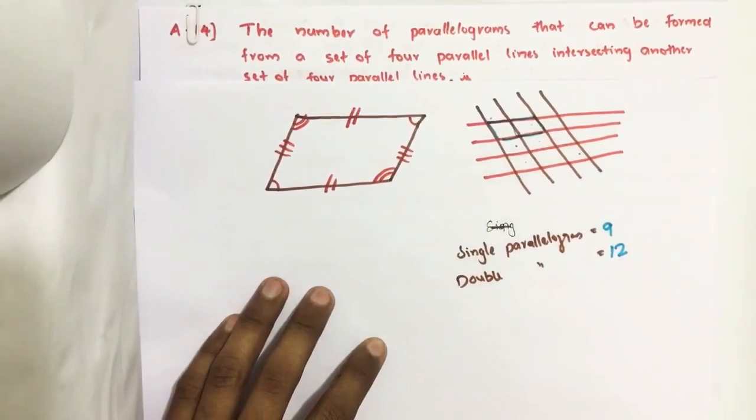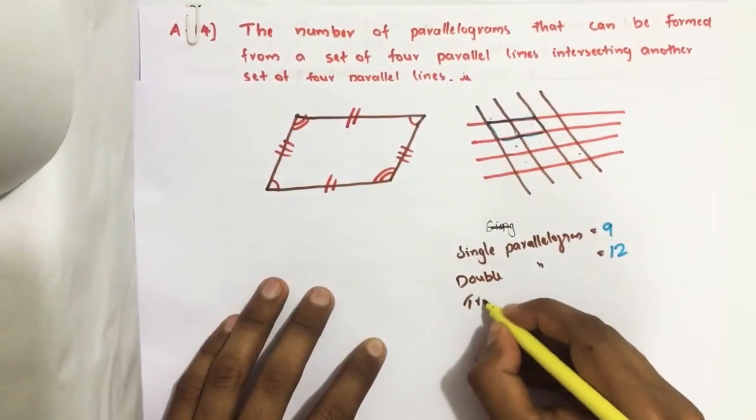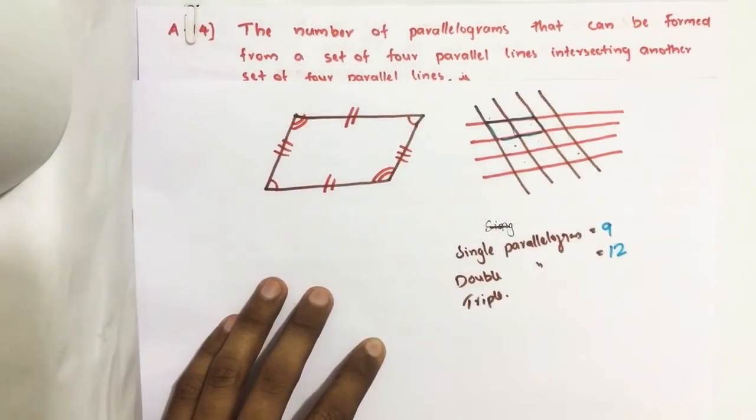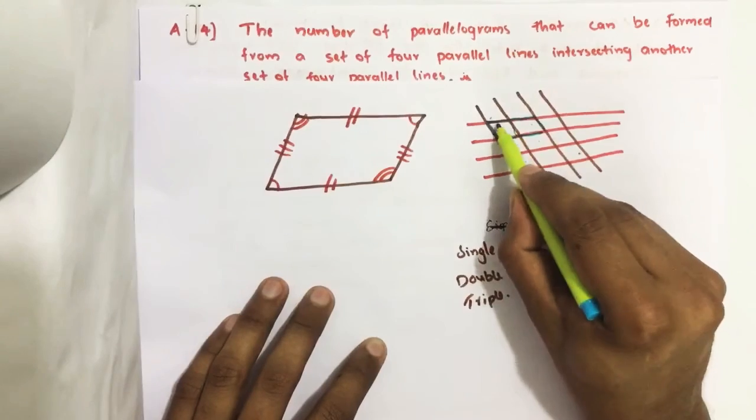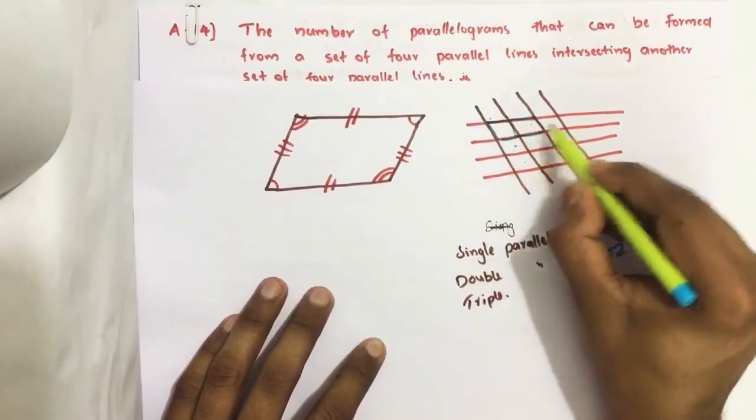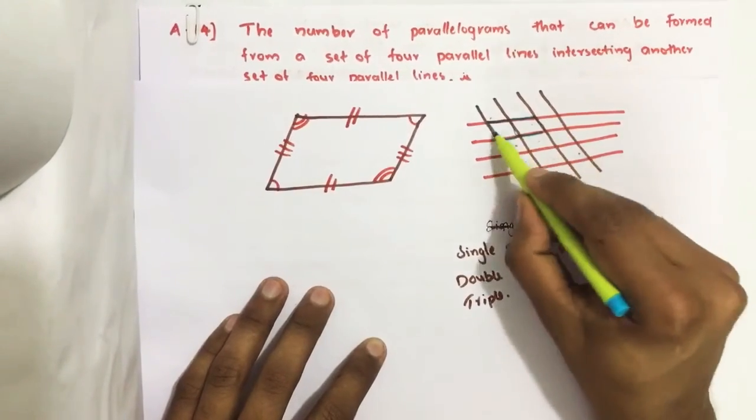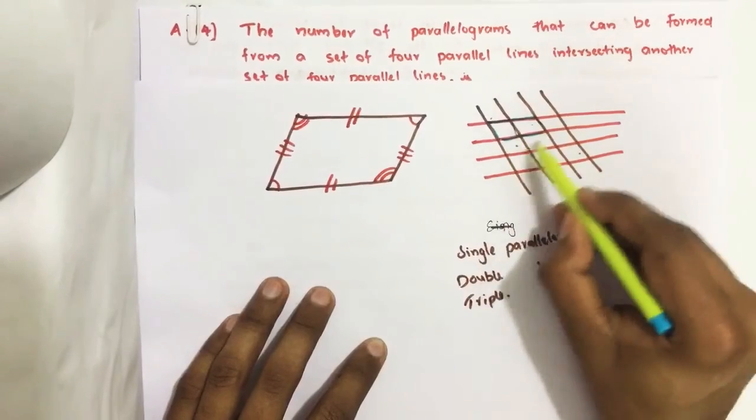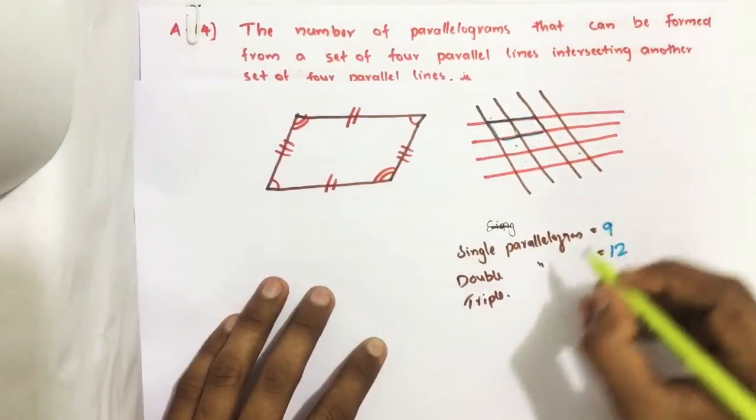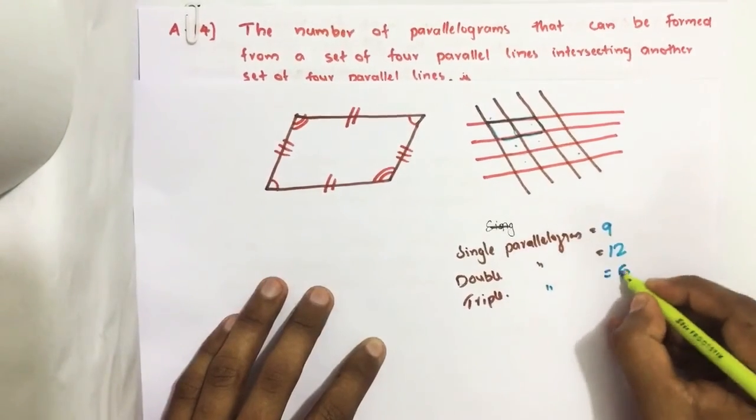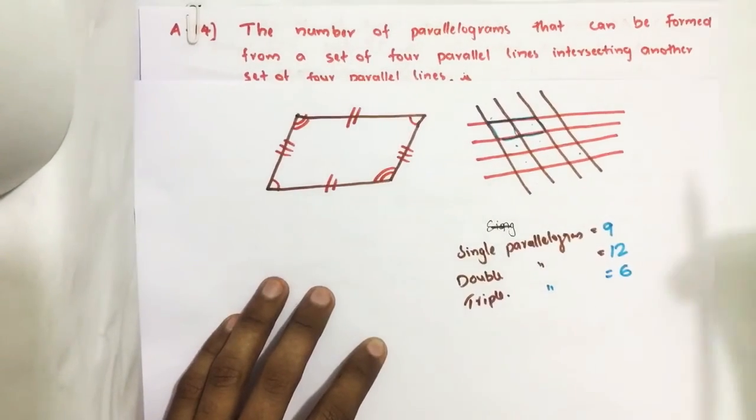Then triple parallelograms. With these 3 sides, with this side parallel and these sides parallel, we get a parallelogram. Like that, 1, 2, 3, 4, 5, 6. Six triple parallelograms are there.